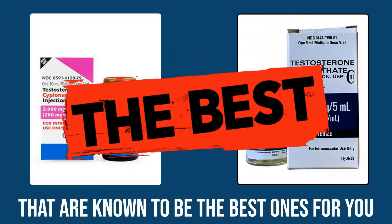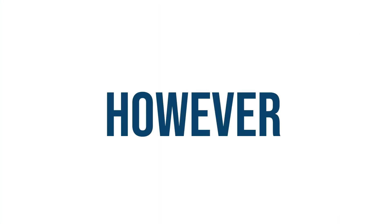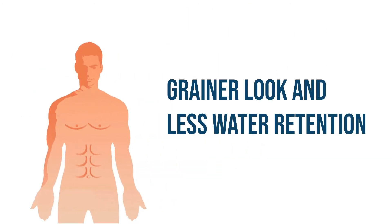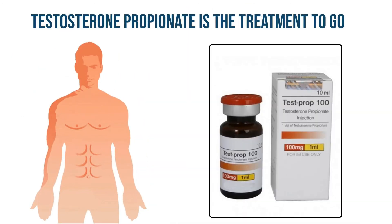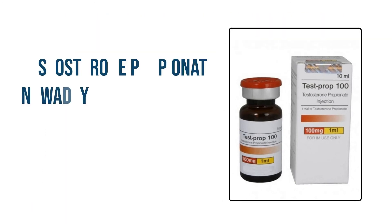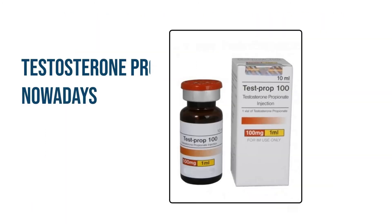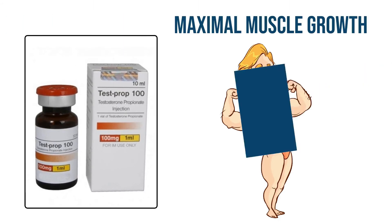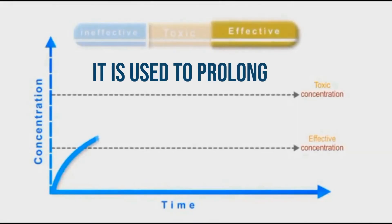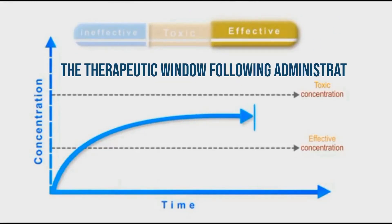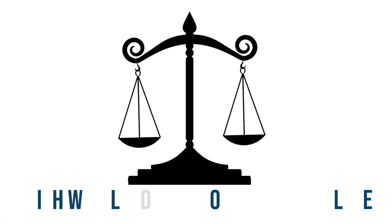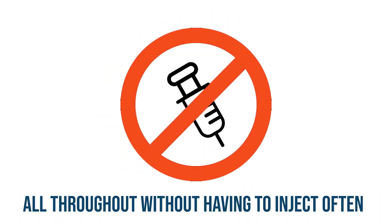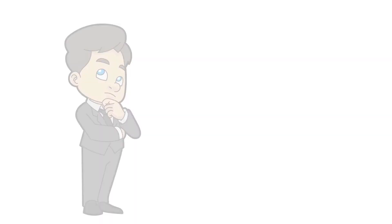However, if you need to compete and want a drier, grainier look with less water retention, testosterone propionate is the treatment for you. Testosterone propionate nowadays is included for its use to stimulate maximal muscle growth. As for the Sustanon solution, it is used to prolong the therapeutic window following administration, which leads to a more balanced level throughout without having to inject often.